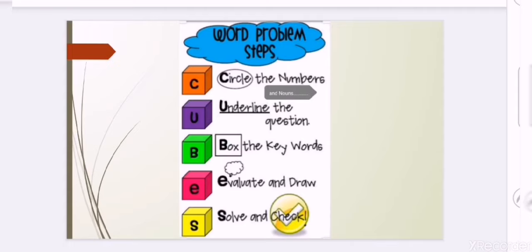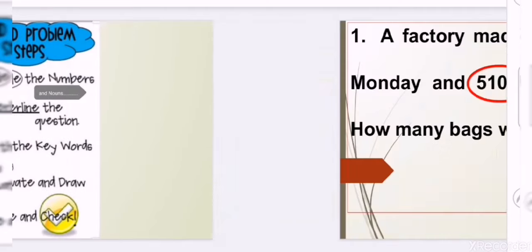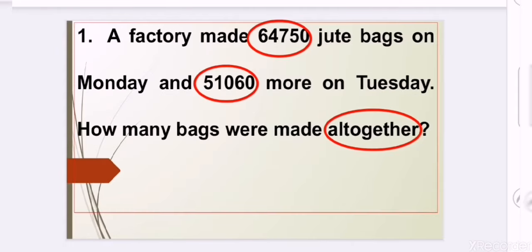First of all, C — C stands for 'circle the numbers.' We circle the numbers, which are 64,750 and the second number, 51,060.